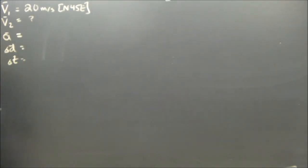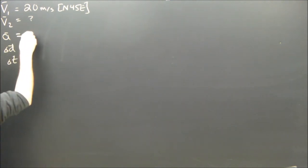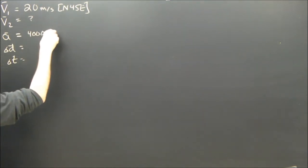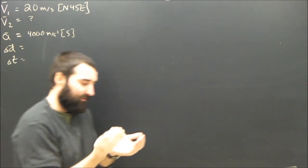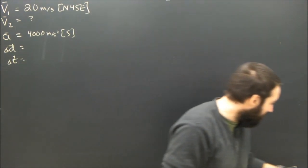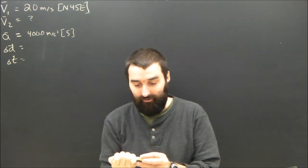We don't know the velocity it has when it leaves. Its acceleration is 4,000 meters per second squared south. A big number, but an electron has very small mass.